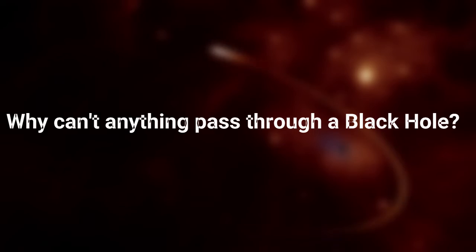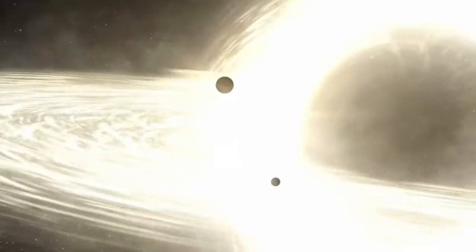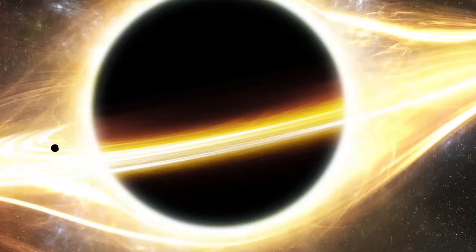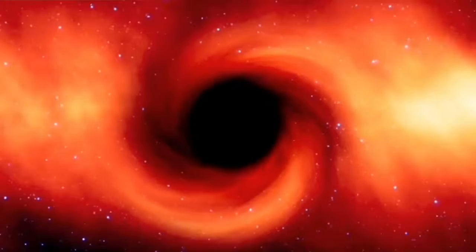Now the next question is, why can't anything pass through a black hole? Here, an object needs to be faster than light to escape. It's the reason why scientists do not see what's on the other side of a black hole. Because any light that gets into a black hole can't come out. Since our sense of sight is because of light, that's why we cannot see the other side of a black hole.